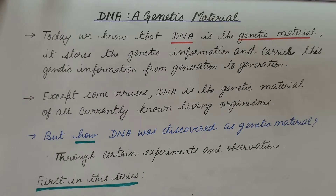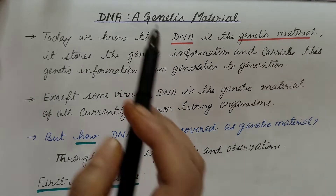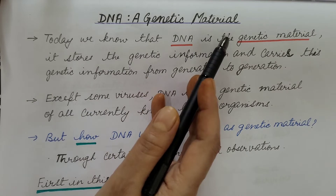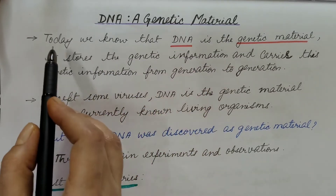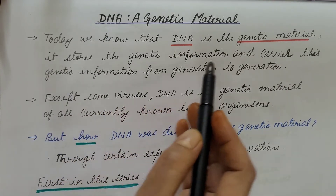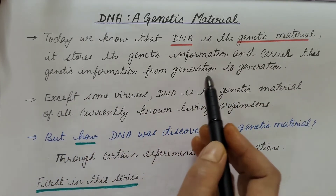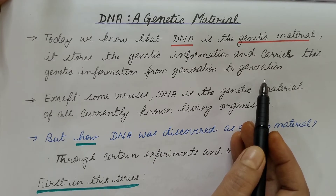Hello friends. We have started discussing DNA, deoxyribose nucleic acid. We discussed the basic features of B-DNA, and then we also compared different forms of DNA: A-DNA, B-DNA, and Z-DNA. In this video, we are going to discuss DNA as a genetic material, or how it was found that DNA is a genetic material. Today we know that DNA stores genetic information and carries it from generation to generation, that is from parents to offspring. So it is hereditary material.